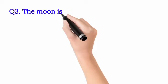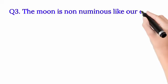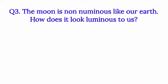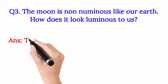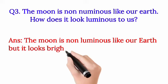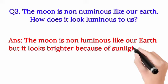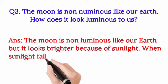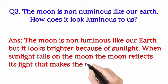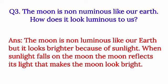Question 3: The moon is non-luminous like our earth — how does it look luminous to us? (چاند ہماری زمین کی طرح غیر روشن جسم ہے، لیکن یہ ہمیں روشن کیسے دکھائی دیتا ہے؟) Answer: The moon is non-luminous like our earth, but it looks brighter because of sunlight. When sunlight falls on the moon, the moon reflects this light, which makes the moon look bright.